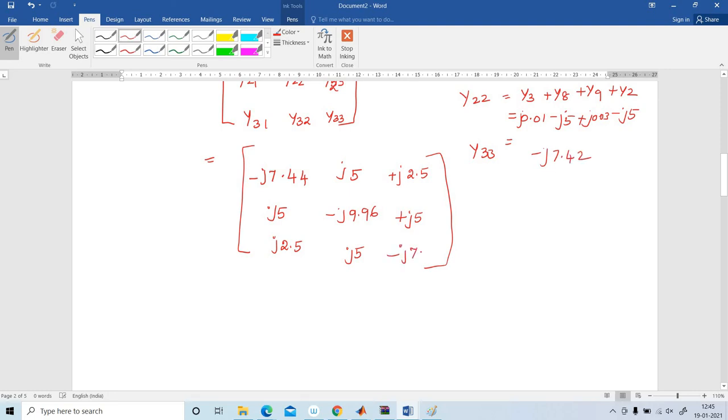So this is the way to find out Y bus matrix for any types of system. First of all, you have to find the number of buses. If the number of buses, that is equal to the size of the matrix. Here, buses is 3, so size of the matrix is 3 cross 3. Thank you. Have a nice day.